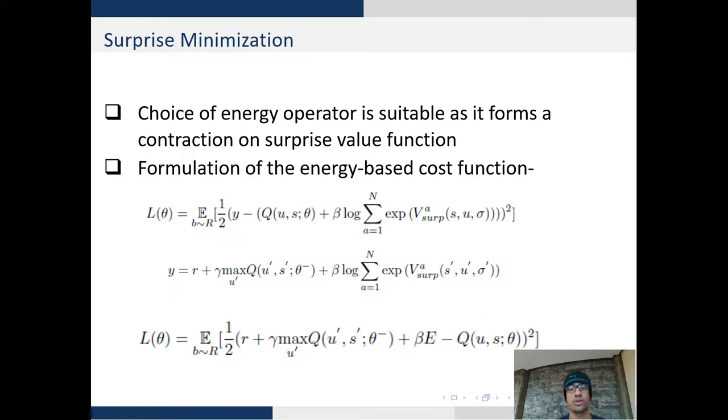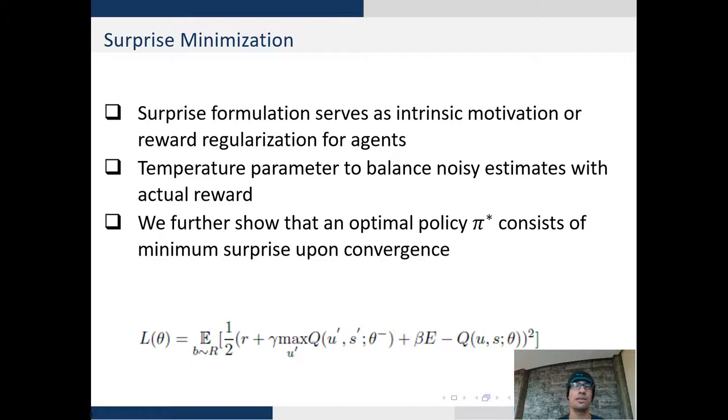We simply incorporate our method with the Q-mix objective and we succinctly write it as Q plus beta E, where E is the energy term. So this is an objective which is tractable and which allows us to optimize our Q-values in the long horizon.